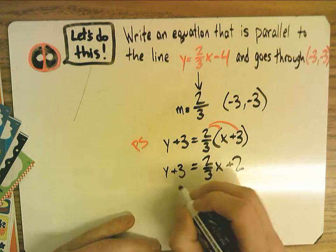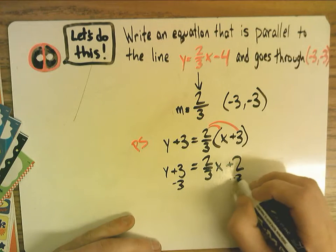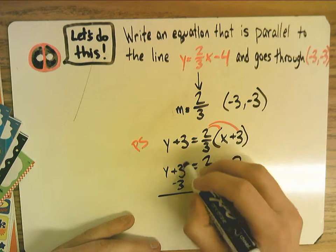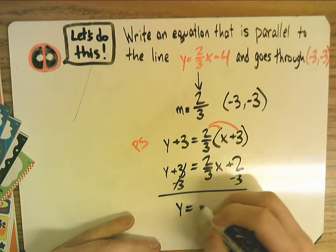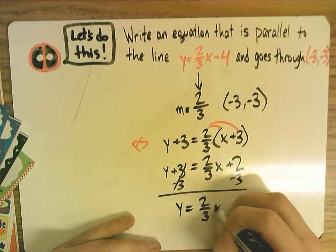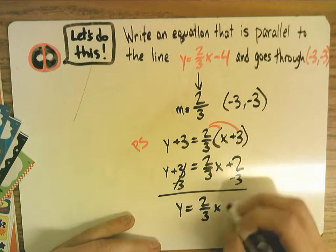And then we can go ahead and isolate y by subtracting three from both sides. So it becomes y equals two-thirds x plus two minus three, minus one.